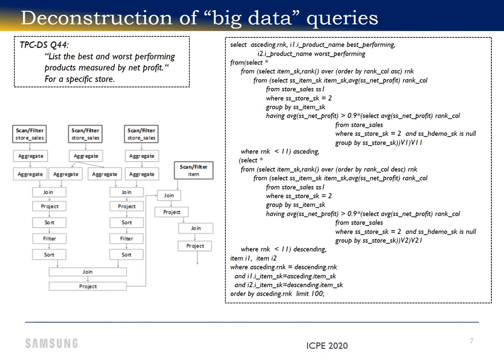The text to the right is the SQL query defining what is needed. The database engine must parse the SQL and determine how that query is to be executed. For big data, the query plan usually looks like the graph to the left.